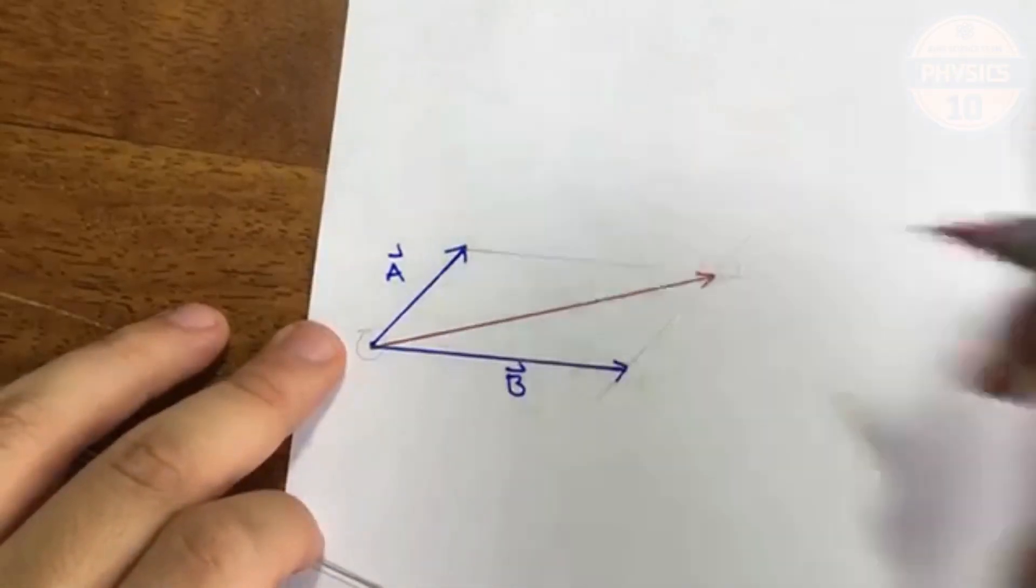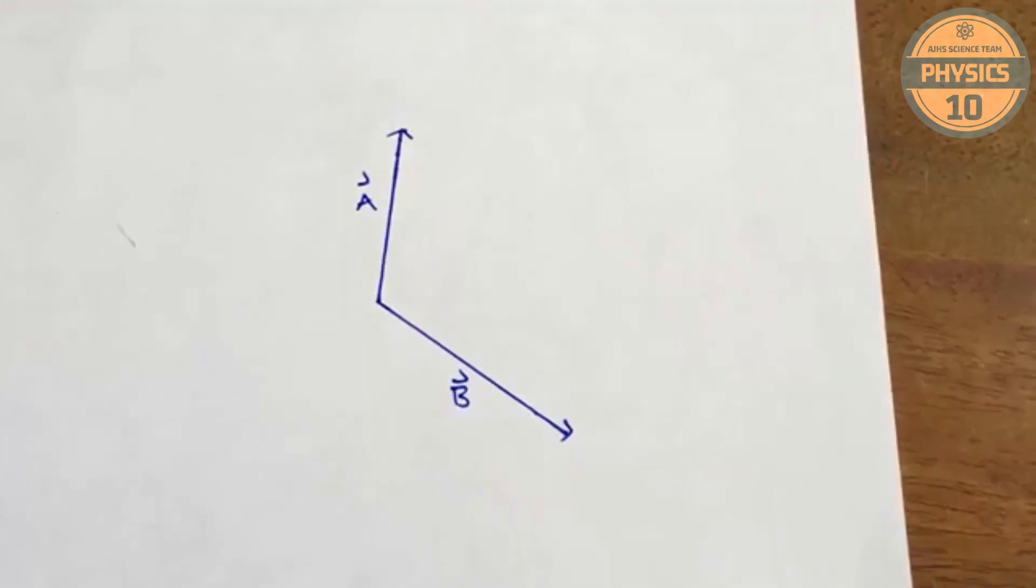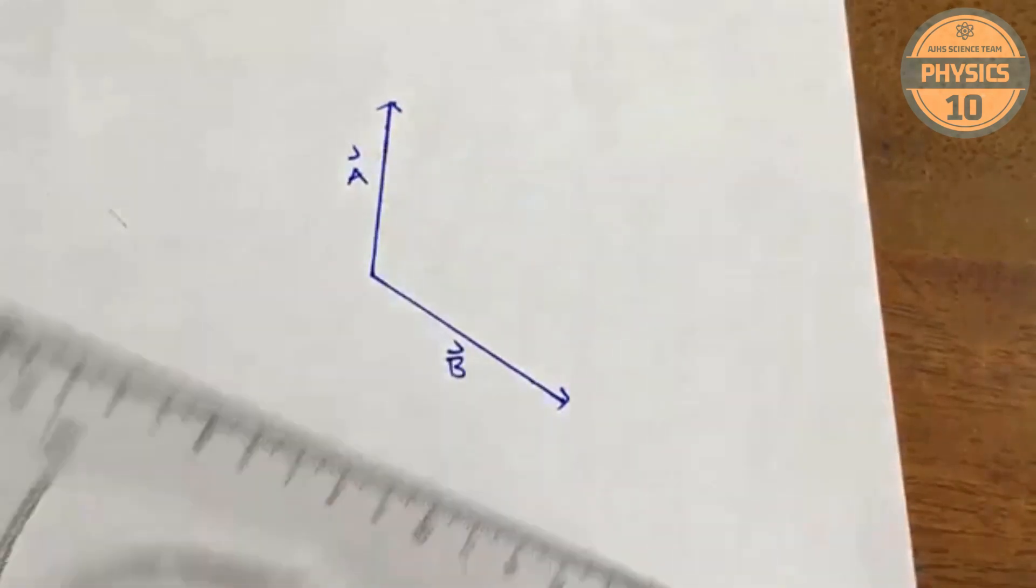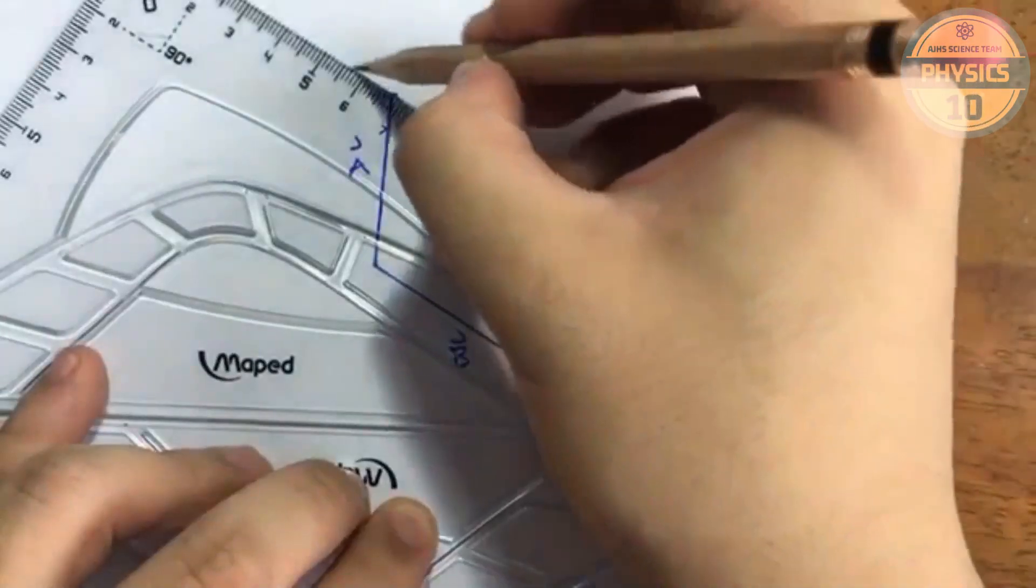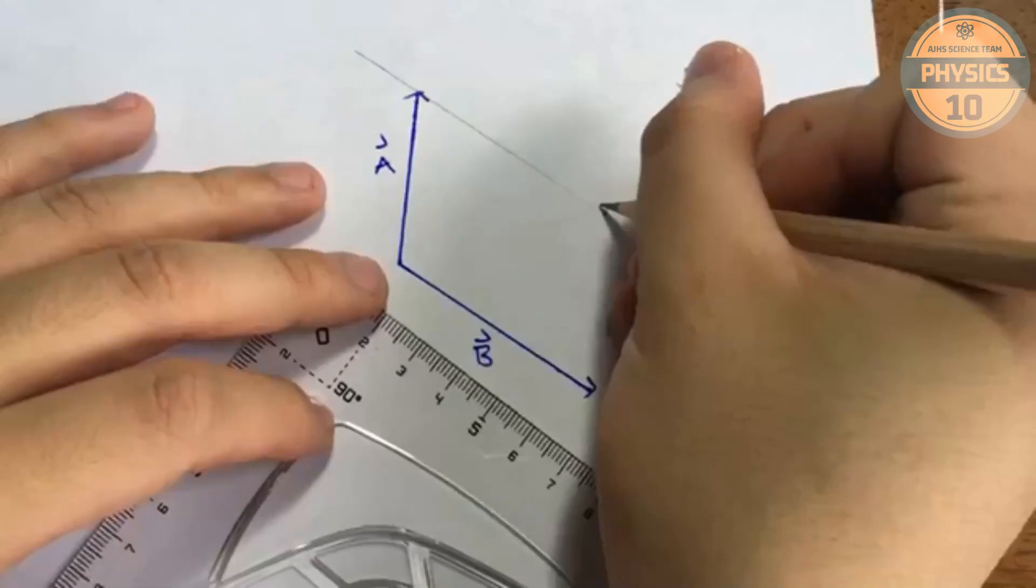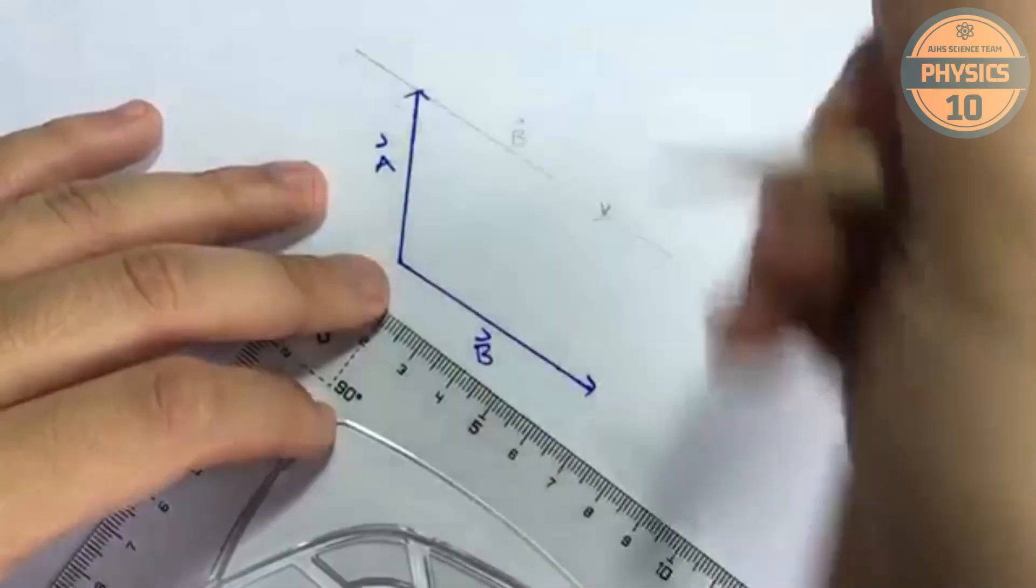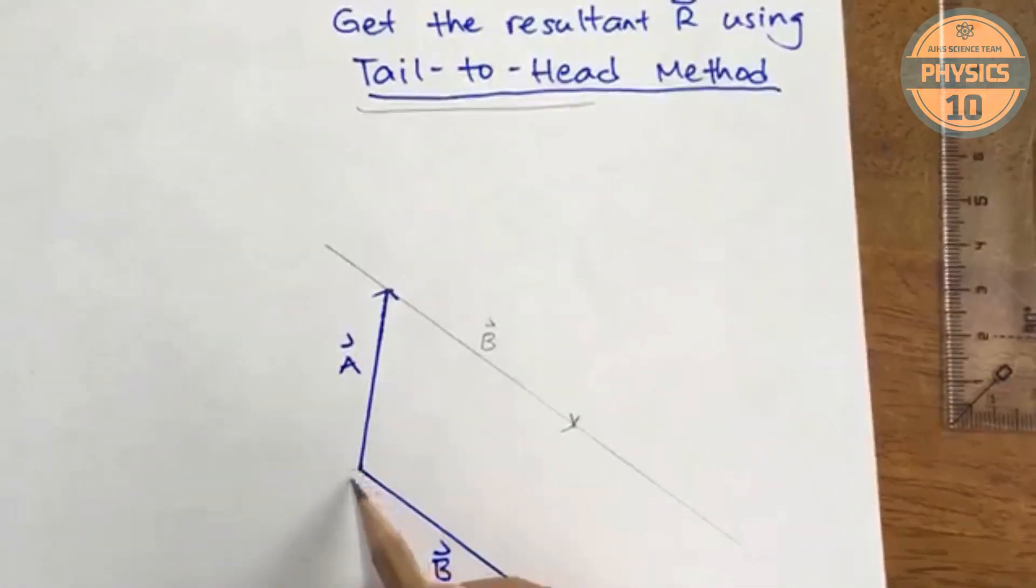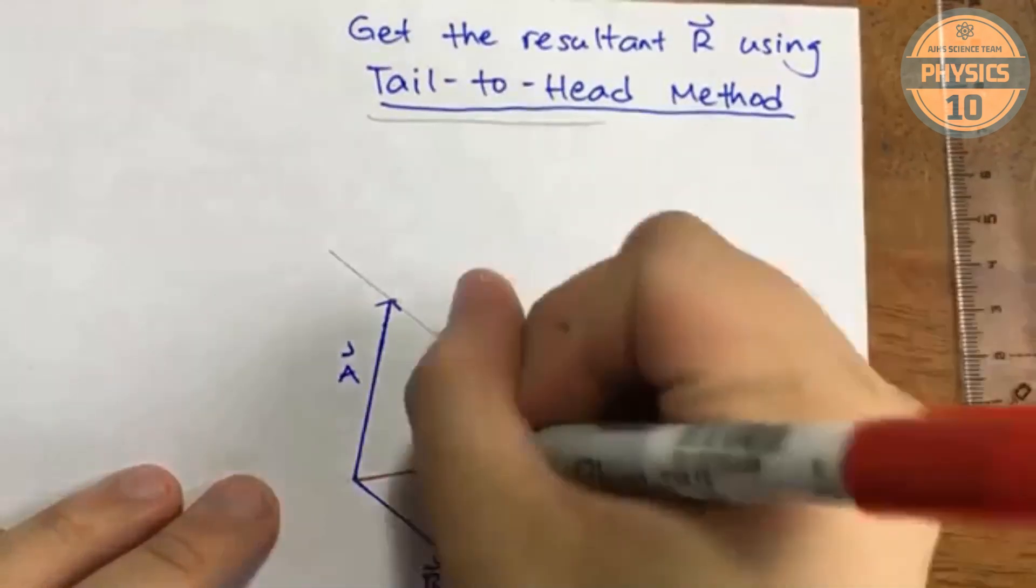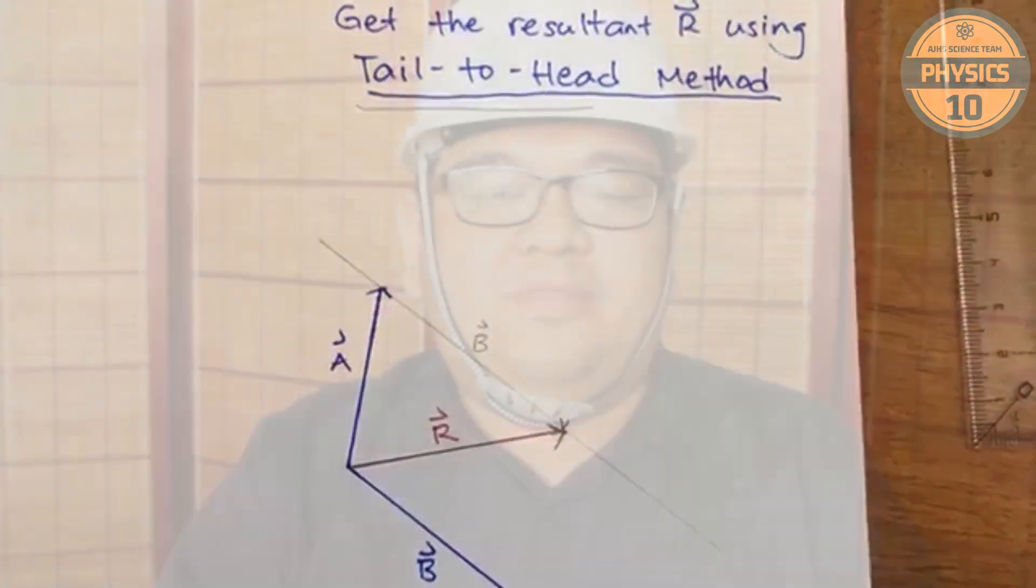Now the other method is called the tail to head method. In this method, it's still the same original setup, but instead of drawing a parallelogram, all you have to do is to copy one vector such that it starts from the head of the other vector. This means that it has to be proportional in terms of size and magnitude. So once you copy this vector, all you have to do then would be to draw a line from the origin point going to the head of the newly moved vector. And this line over here is now your resultant vector.